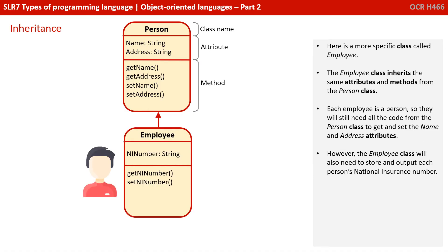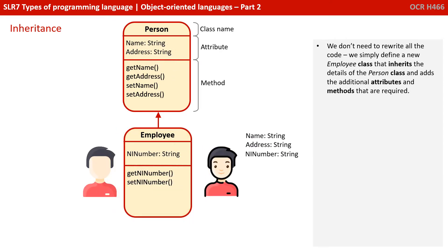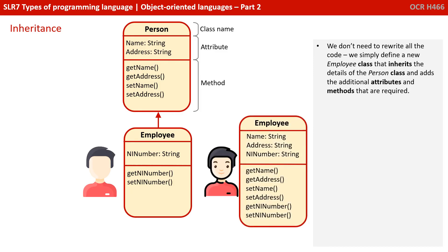Here's a more specific class called employee. The employee class is said to inherit the same attributes and methods from the person class. Each employee is a person, so they will still need all the code from the person class to get and set their name and address attributes. However, the employee class will also need to store and output each person's national insurance number. We don't need to rewrite all the code — we simply define a new employee class that inherits the details of the person class and then adds the additional attributes and methods that are required.